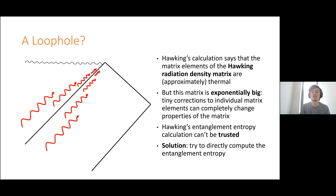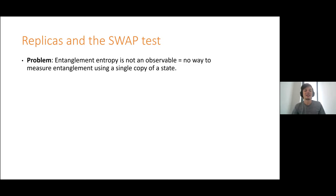The solution is to try and do a calculation that actually directly computes the entanglement entropy for us, rather than computing individual matrix elements with their own little errors and then trying to use that to work out the entropy. There's an annoying fact that entanglement entropy is sort of not an observable — there's no way using a measurement from a single copy of a state to tell whether it was an entangled state.